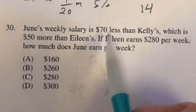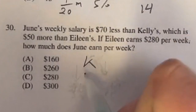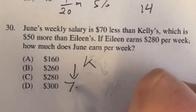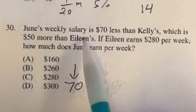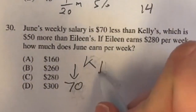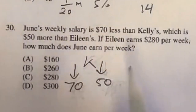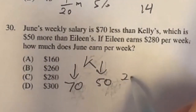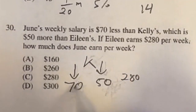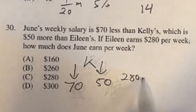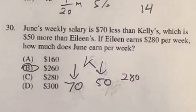Number 30: June makes $70 less than Kelly, and Kelly makes $50 more than Aline. Aline makes $280. Since June is $70 less than Kelly, and Kelly is $50 more than Aline, June is $20 less than Aline. So $280 minus $20 gives a final answer of $260, which is answer B.